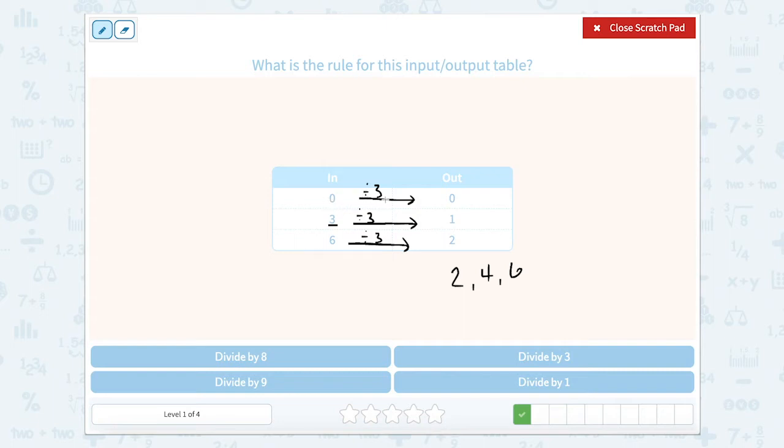0 divided by any number, 0 divided by 1, 0 divided by 2, 0 divided by 3, 0 divided by 100 is always going to give us 0. So our rule for this input-output table is divide by 3.